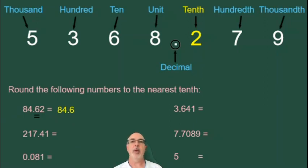In the second example, we have 217.41. The four is in the tenth position, and the number to the right of it is less than five, so we're rounding down again. We have 217.4 as our answer.